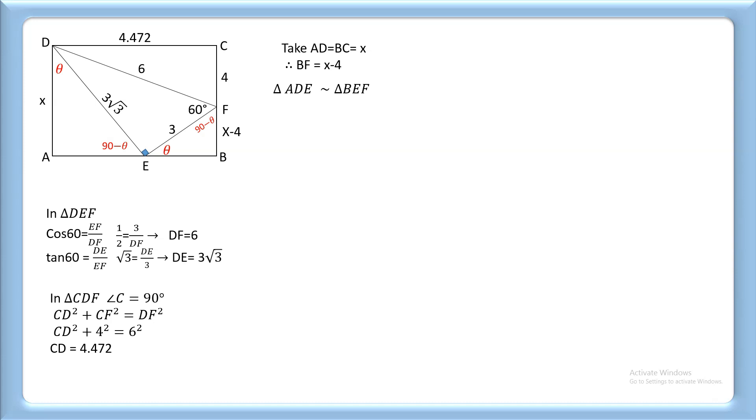Now AE² equals (3√3)² minus x² based on the Pythagorean theorem. Therefore, AE equals √(27 - x²).